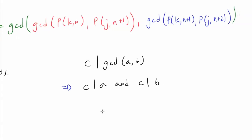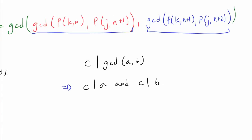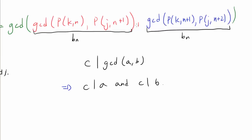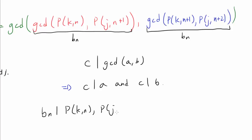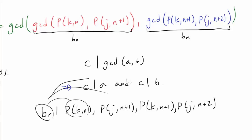We know b_n is the GCD of a_n and a_{n+1}, so b_n divides a_n and b_n divides a_{n+1}. Because b_n divides the GCD of each pair, b_n is a common divisor of all four quantities. That is, b_n divides p(k, n), p(j, n+1), p(k, n+1), and p(j, n+2).